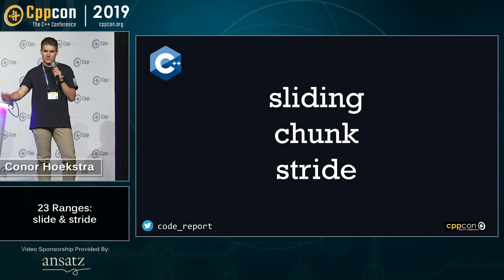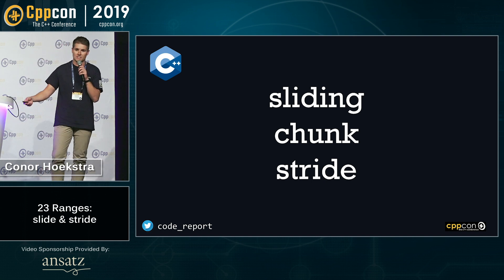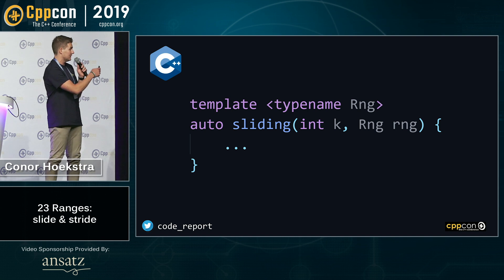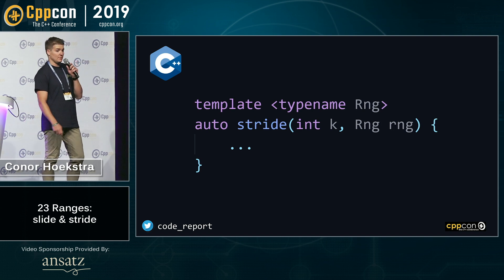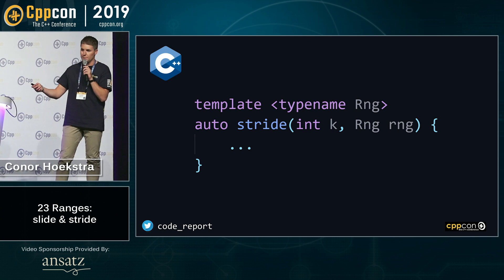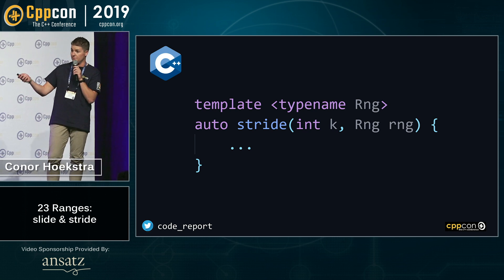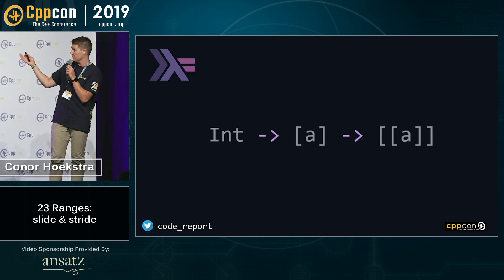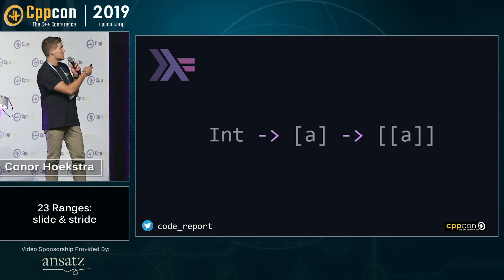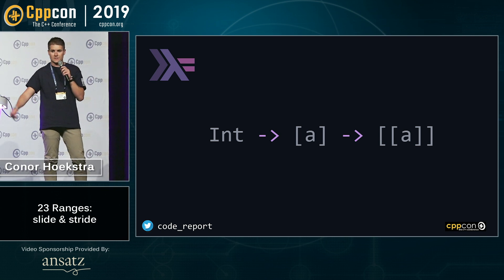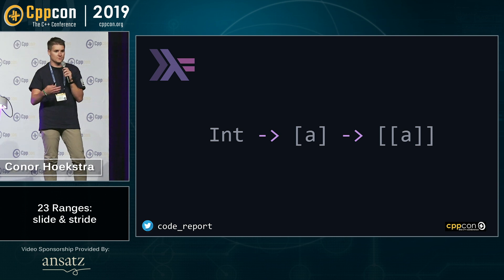The function declaration of each of these looks very similar — they take two parameters, an integer k and a range. So sliding might look like this, chunk might look like this, and stride might look like this. If you are a functional programming enthusiast like myself and you love Haskell, the type signature of the equivalent function in Haskell would be: an integer, a list of a (a as a generic type), returning a list of lists of a. So for our C++ functions, those are going to be returning a range of ranges.